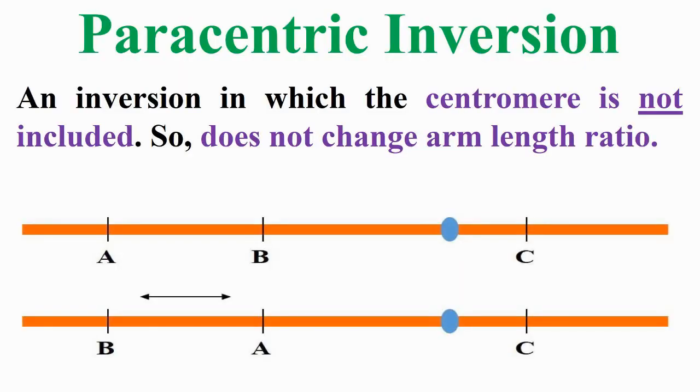There are two types of inverted chromosome. Paracentric inversion is an inversion in which the centromere is not included, so this inversion does not change arm length ratio, as noticed in the figure inside the slide.